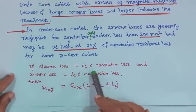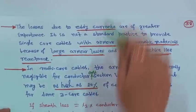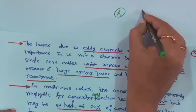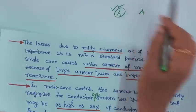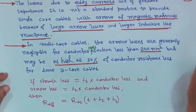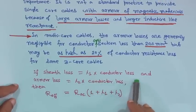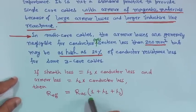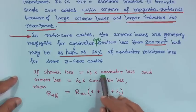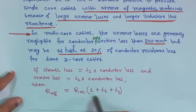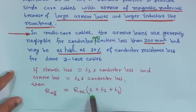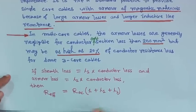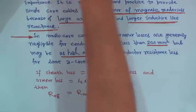If sheath loss equals lambda 1 times conductor loss, and armour loss equals lambda 2 times conductor loss, then R effective equals R_AC plus lambda 1 into conductor loss. So R effective will be R_AC into (1 + lambda 1 + lambda 2). All these things must be found to get the effective cable resistance.